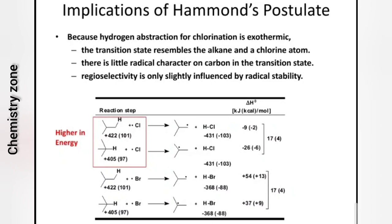Because hydrogen abstraction for chlorination is exothermic — it releases heat energy, meaning bond formation occurs — the transition state structure resembles the reactant. So the transition state resembles the alkane and chlorine atom together. There is little radical character on carbon in the transition state for chlorination. The radical activity is only slightly influenced by radical stability.